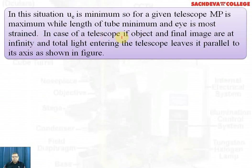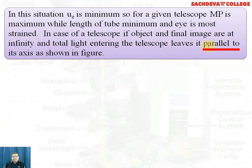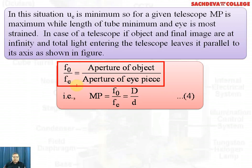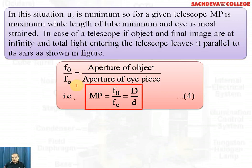In the special case of a telescope where both object and final image are at infinity, and total light entering leaves parallel to the axis, F0 over Fe equals the aperture of objective divided by the aperture of eyepiece, so magnifying power equals F0 over Fe, which also equals D (aperture of objective) over d (aperture of eyepiece).